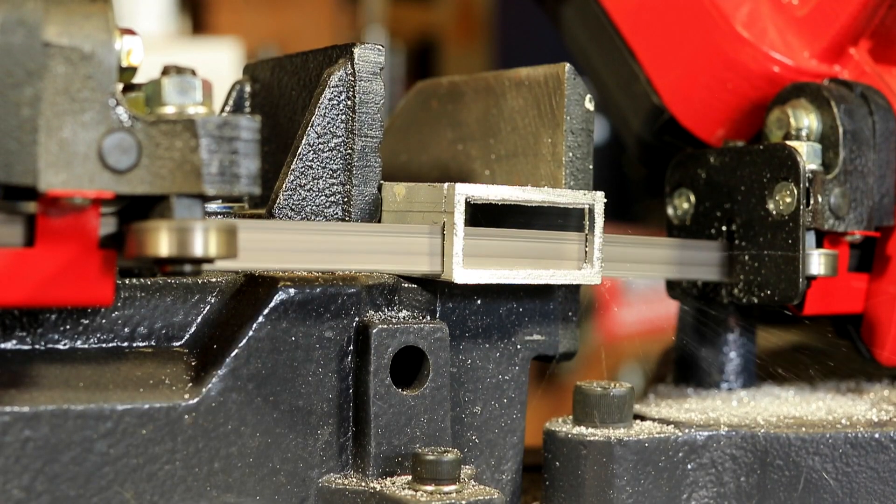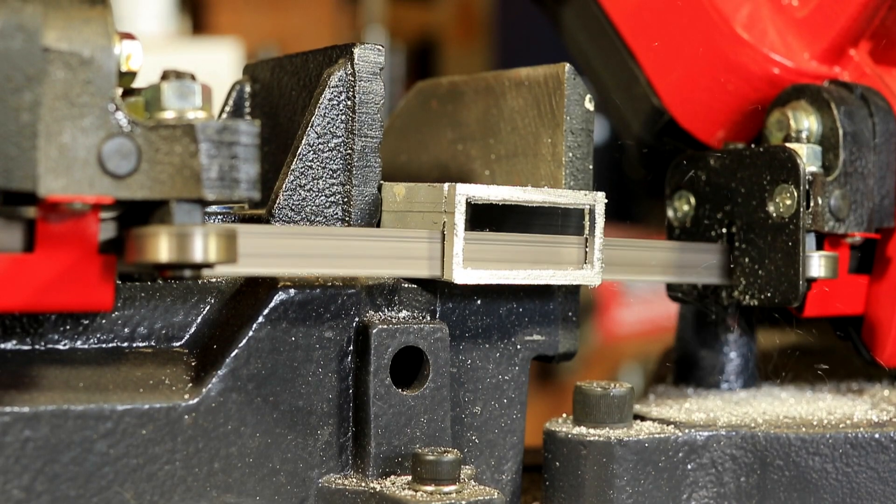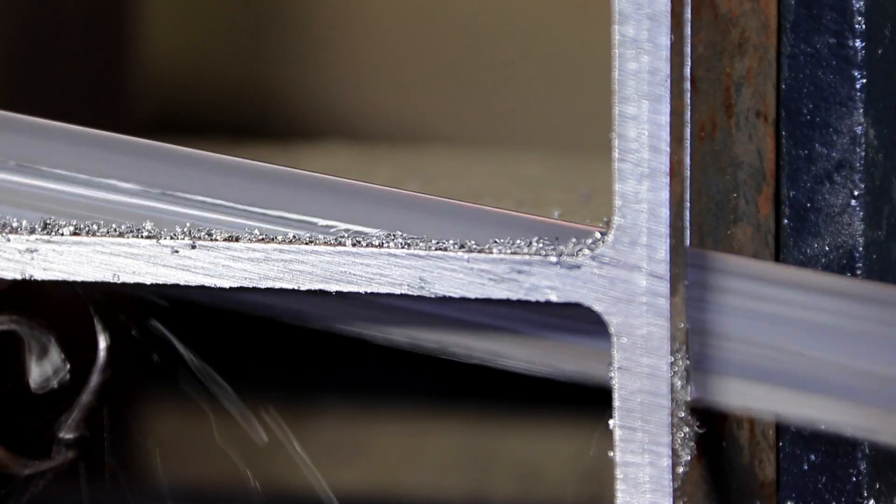You want to have the proper gullet capacity for chip removal in your material. The easy rule of thumb is 3 teeth per inch to 6 teeth per inch in your workpiece.